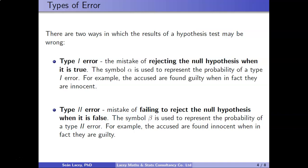A type 2 error is where you incorrectly fail to reject the null hypothesis — where you say somebody is innocent but in fact they are guilty. The tolerance you would allow yourself to make a type 2 error uses the symbol beta. Looking at 1 minus beta gives you your statistical power, which I'll discuss in a future video. To summarize: a type 1 error is incorrectly rejecting the null hypothesis; a type 2 error is incorrectly failing to reject the null hypothesis.